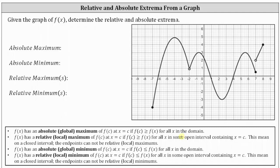Analyzing the graph, notice how the highest point is this point here, where the ordered pair is negative four comma five. This indicates that the y value or function value of five is the absolute maximum, which occurs at x equals negative four. We list five as the absolute maximum.